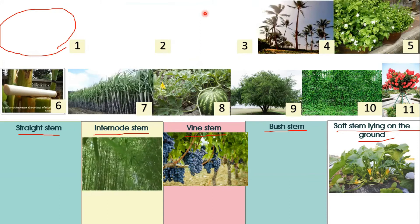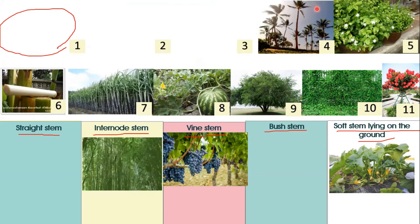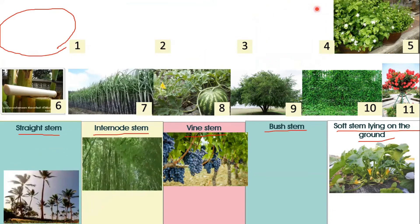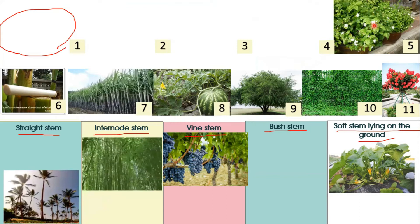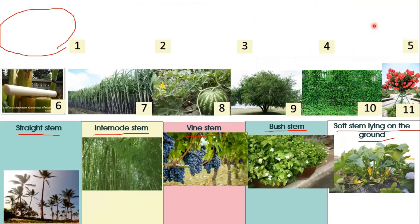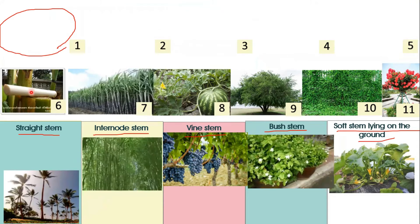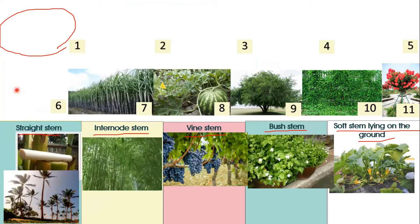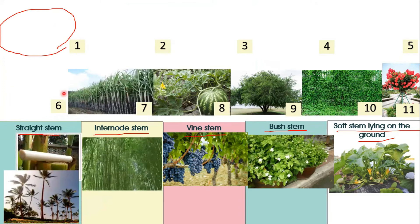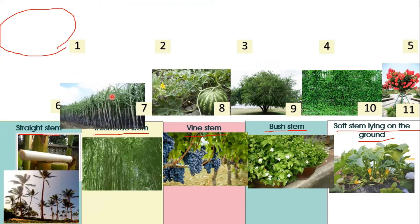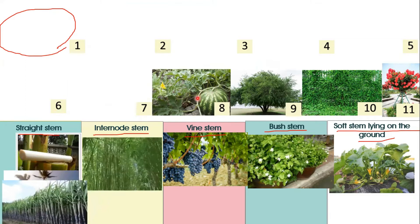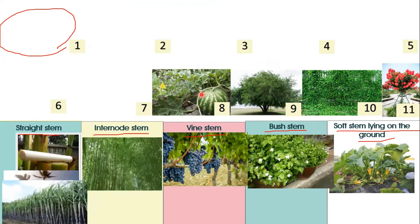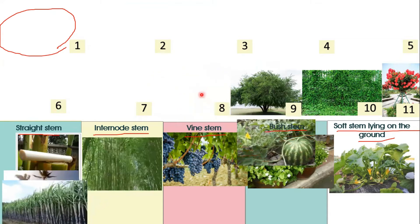Number four is the coconut tree — the coconut tree has the straight stem. Number five is jasmine — jasmine has the butch stem. Number six is the banana tree — the banana stem has the straight stem. Number seven is sugar cane — sugar cane has the straight stem. Number eight is watermelon — watermelon has the soft stem.